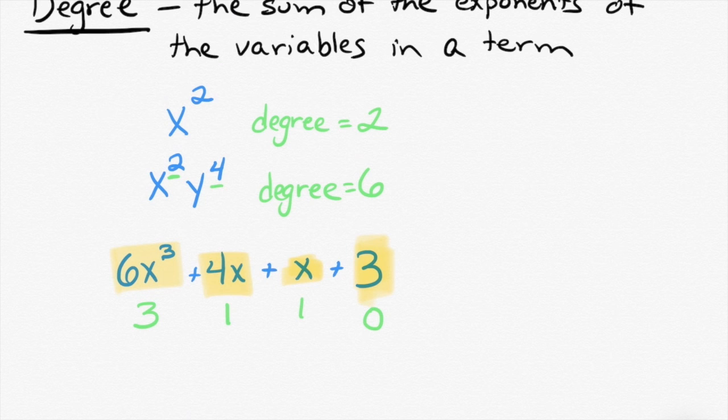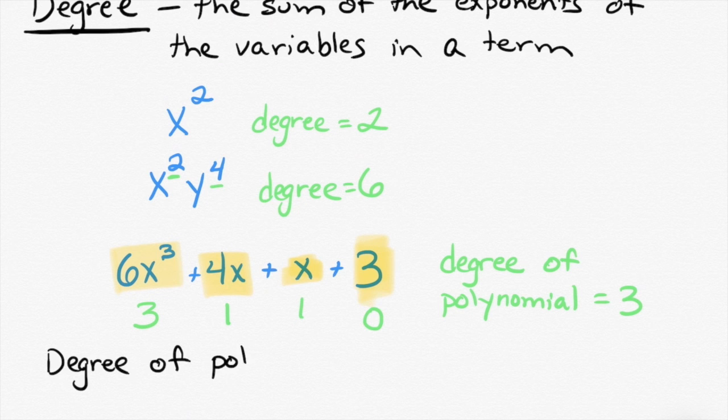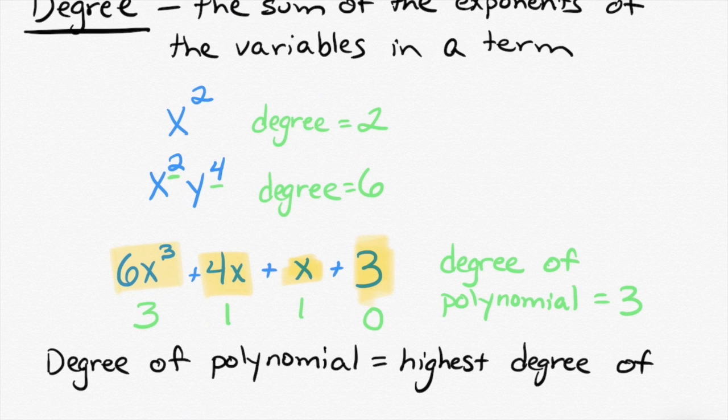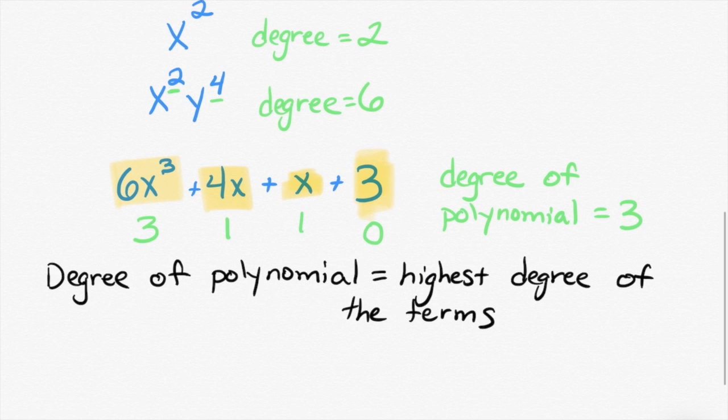Very good. There is no variable, so there is no exponent on the variable. Now, you'll notice that this is not a term. This is a set of terms, a polynomial. So the degree of the polynomial is the highest degree of the terms. So the degree of this polynomial is 3.